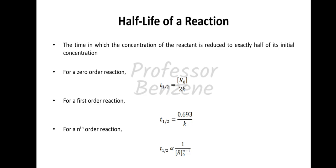For a zero order reaction, T½ is given by [R₀] upon 2k. For a first order reaction, it is given by 0.693 upon k. For the nth order reaction, T½ is proportional to 1 upon [R₀]^(n−1). The first order half-life, 0.693 upon k, is independent of the concentration of the reactant.